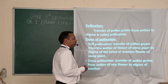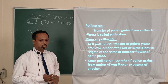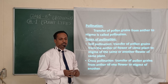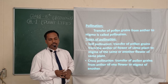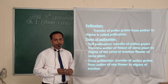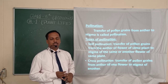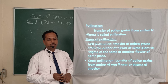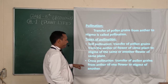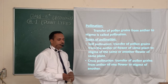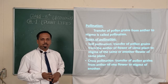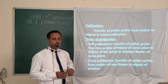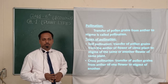Pollination is of two types. First is self-pollination, in which the pollen grains of one flower of the same plant are transferred to the same or another flower of the same plant. Second is cross-pollination, in which the pollen grains are transferred from the anther to the stigma of a flower of one plant to a flower of another plant.